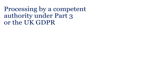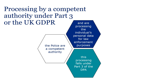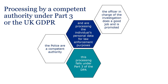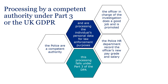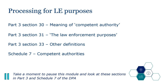Let's look at an example. The police are investigating an individual they suspect of committing a burglary. The police are a competent authority and are processing the individual's personal data for law enforcement purposes, so this processing falls under Part 3 of the DPA. However, when the officer in charge of the investigation is promoted and the HR department records the officer's new pay grade and salary, this is not processing for a law enforcement purpose and falls under the UK GDPR. Depending on the purpose of the processing, the police will process under Part 3 of the DPA or the UK GDPR. Take a moment to pause this module and look at Sections 30, 31, and 33 in Part 3 of the DPA and Schedule 7.